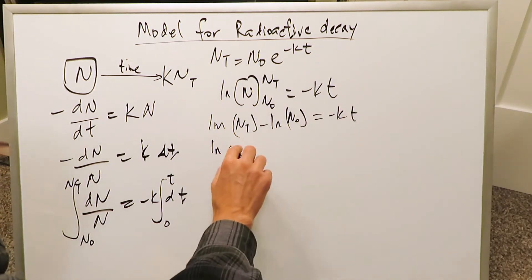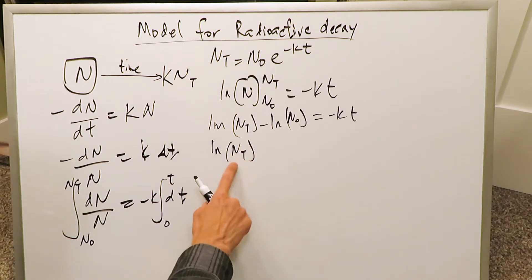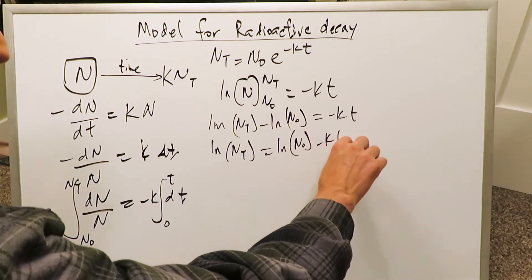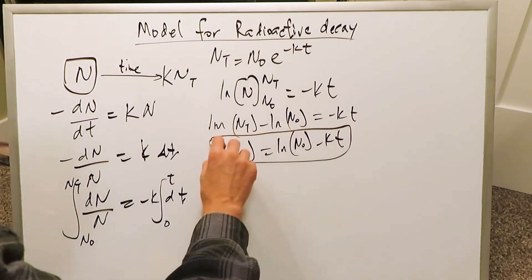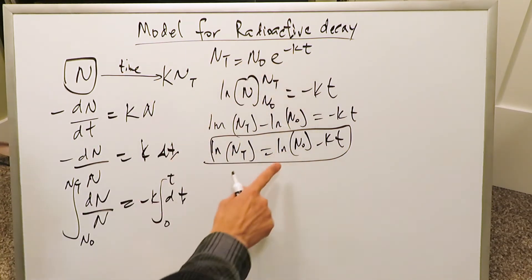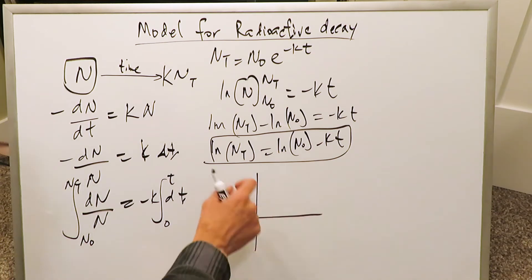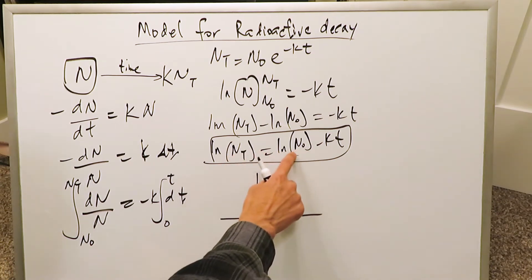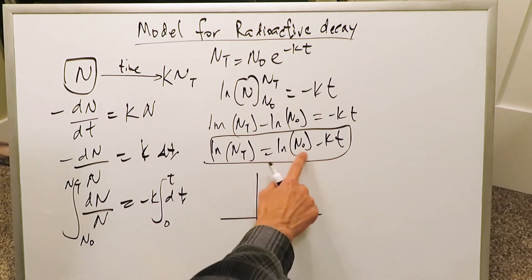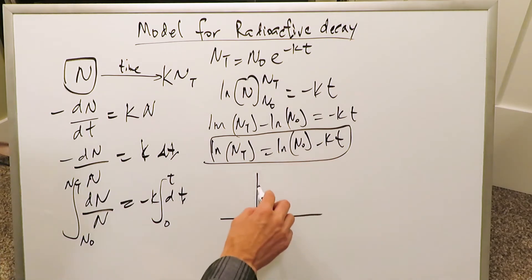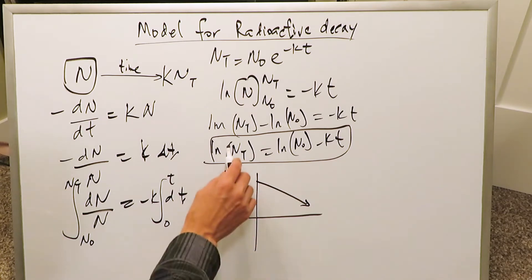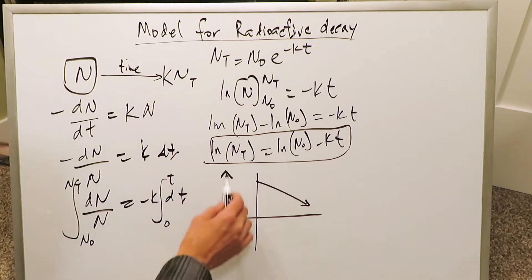Applying the upper and lower limits, you have natural log N(t) minus natural log N₀ equals minus kt. Taking the N₀ term to the other side: natural log N(t) equals natural log N₀ minus kt. This is a good linear equation of the entire radioactive process — expressed in linear format, like y equals b minus mx, indicating a negative slope.